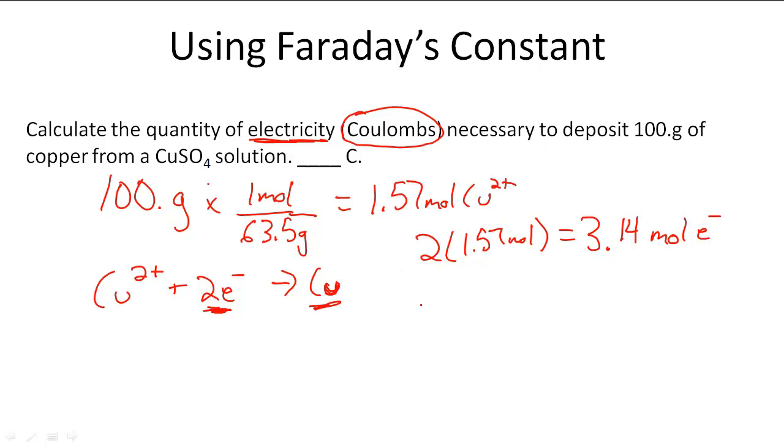So now that we have that, we can use Faraday's constant. Faraday's constant is equal to 96,487 coulombs per mole of electrons.